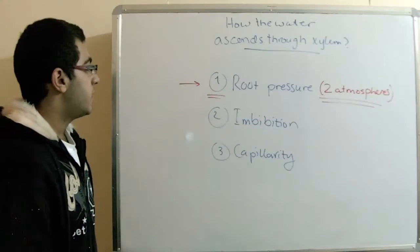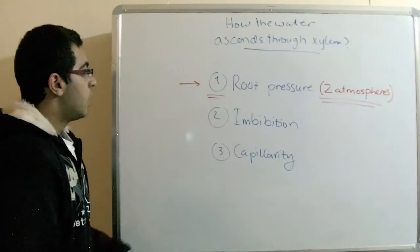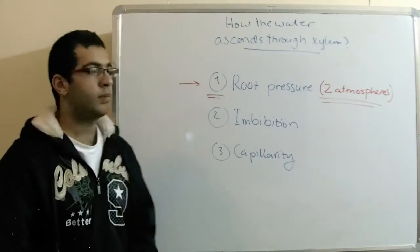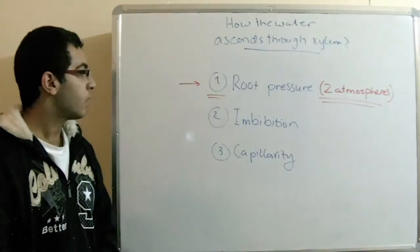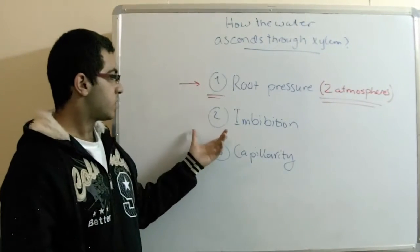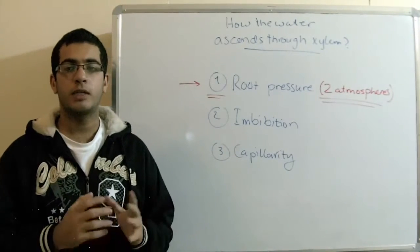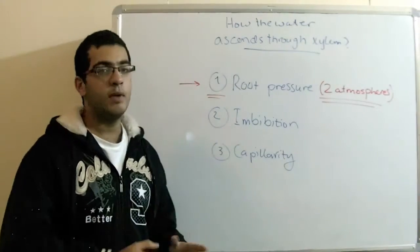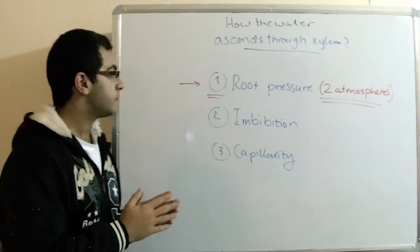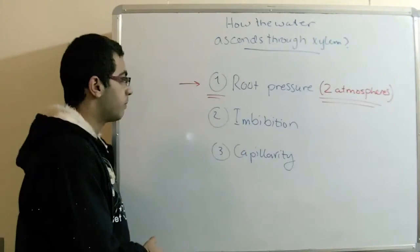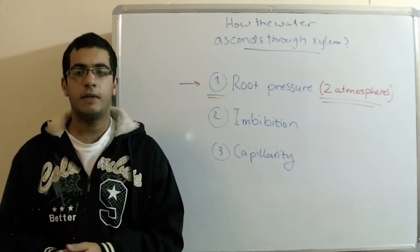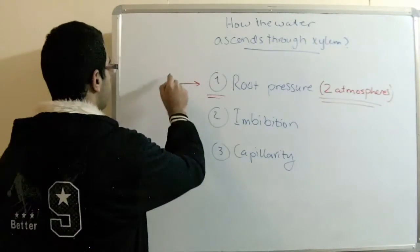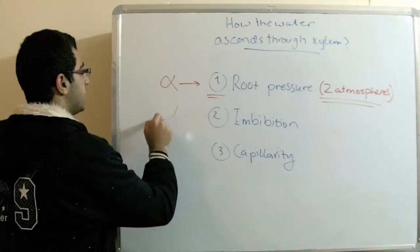The second suggestion is the imbibition. As we knew previously, that the imbibition is done by the colloidal cells, which pose a strong affinity for water. They absorb the water, swell, then pass it to the other cells and so on. But the imbibition is just limited to the passage of water from the root cells to the beginning of the xylem vessels, but through the xylem vessels there is no imbibition. So the first one is wrong, and the second also is wrong.